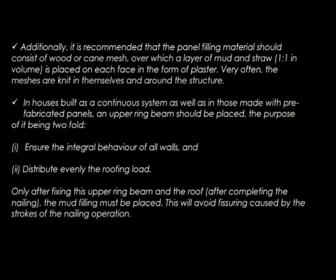Additionally, it is recommended that the panel filling material should consist of wood or cane mesh over which a layer of mud or straw — 1 to 1 in volume — is placed on each face to form a plaster. Very often the meshes are knit in themselves and around the structure. Basically, you have a horizontal and vertical frame of wood or bamboo, and on either side you have a 1 to 1 proportion of mud and straw placed as plaster — that is how the construction happens. In houses built as continuous systems or with prefabricated panels, an upper ring beam should be placed, serving two purposes: to ensure integral behavior of all walls, and to distribute evenly the roofing load. Only after fixing the upper ring beam and completing the roof nailing should the mud filling be placed, to avoid fissuring caused by the strokes of the nailing operation.